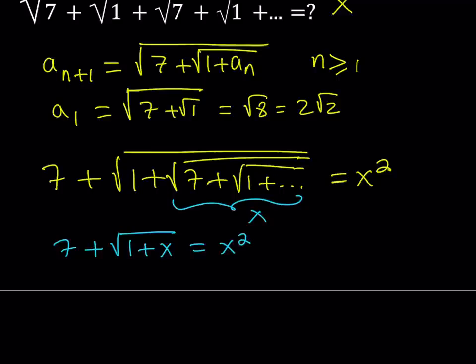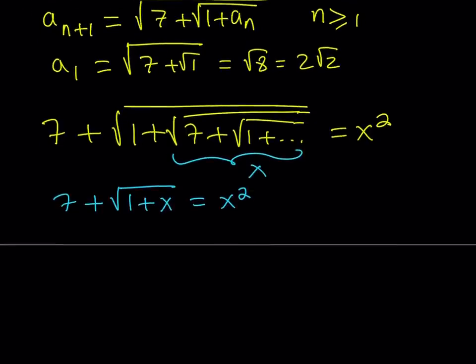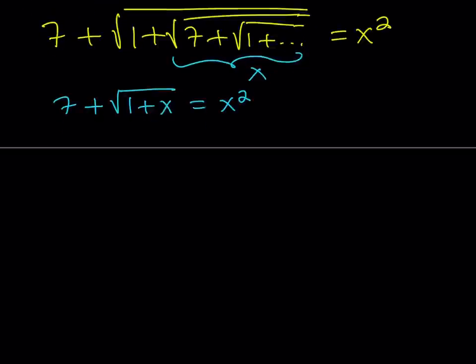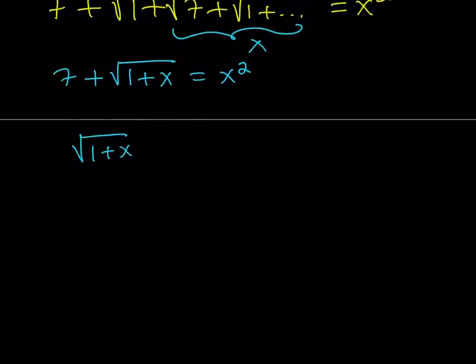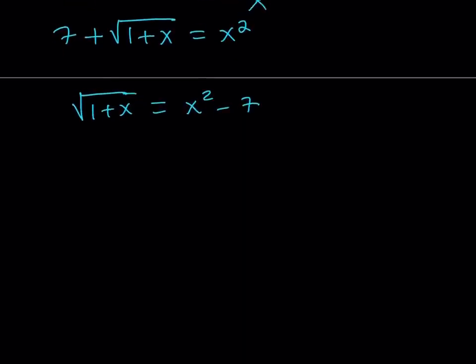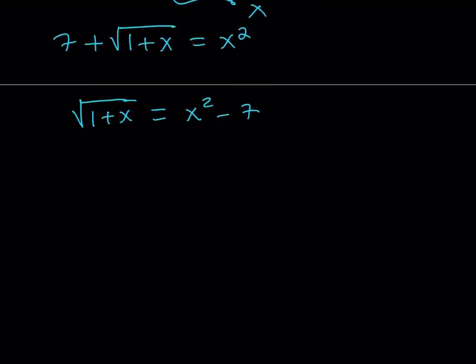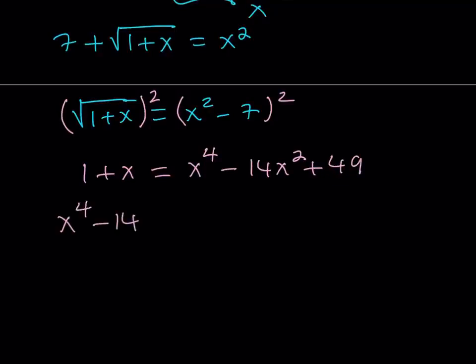Obviously we didn't get a quadratic like in the other simpler case. We're going to be getting a quartic equation from here. Let's go ahead and isolate the radical first. Square root of 1 plus x can be written as x squared minus 7. Let's square both sides. That should give us 1 plus x equals x to the 4th power minus 14x squared plus 49. Putting everything on the same side gives us x to the 4th minus 14x squared minus x plus 48 equals 0.